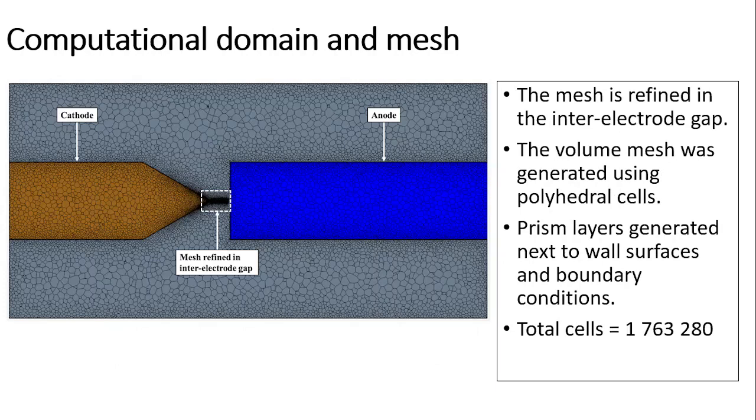This image shows the generated volume mesh. The mesh was refined in the inter-electrode gap because this is the physical space where the plasma arc is initially ignited, which results in high spatial gradients.